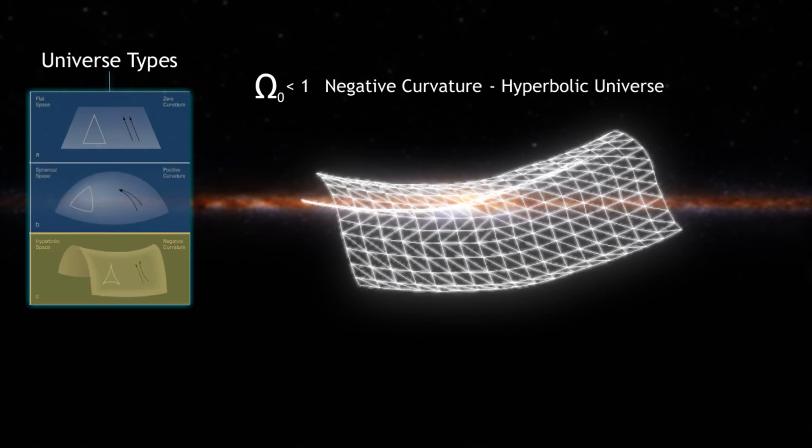This type of shape is negatively curved and also an open type of universe where it can extend infinitely as long as there is enough momentum in the universe's expansion, then there is gravitational force.